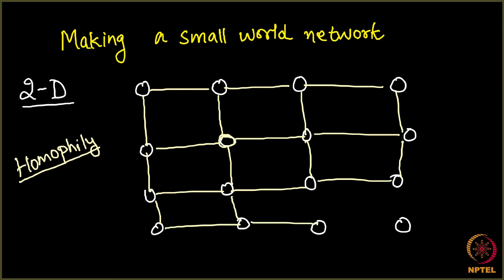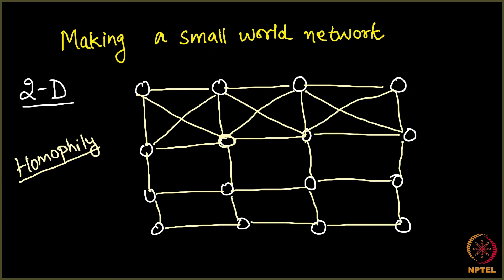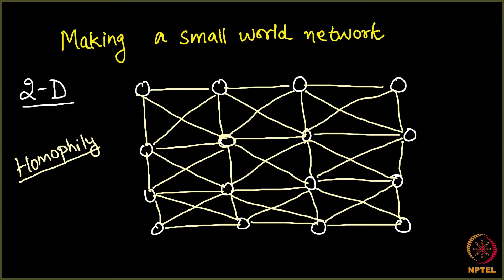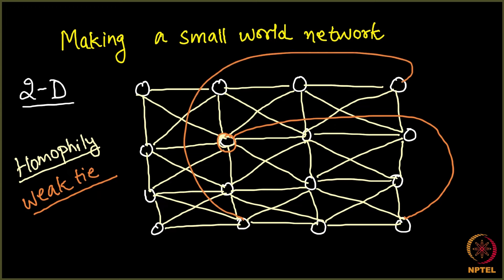We get a grid something like this. We can even connect these nodes to their diagonally opposite partners because they are also geographically closer, so we can make a grid like that as well. All these links are because of homophily. Then what makes this world small is the presence of weak ties — the second concept which gave rise to small world networks. Every node, for example this node, will be randomly connected to some node which is quite far away. These weak ties make our world small.